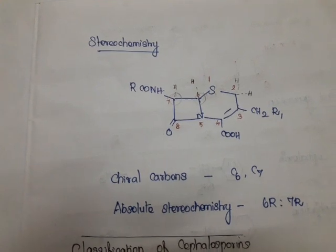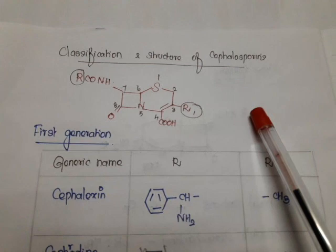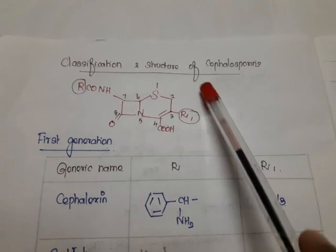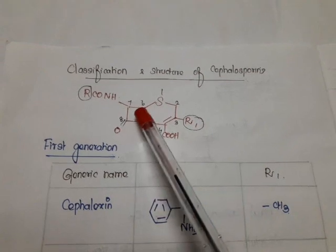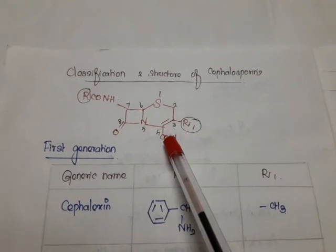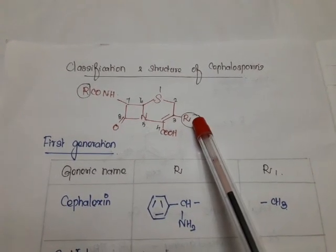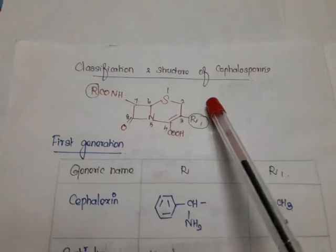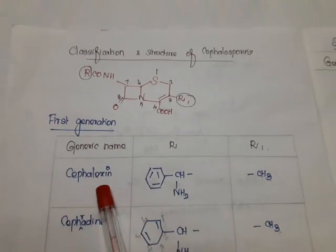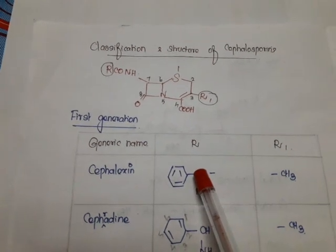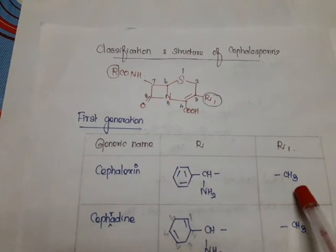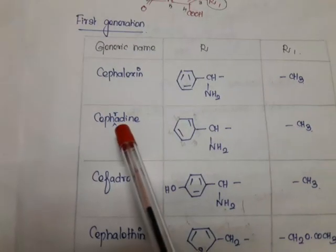Now we'll see the classification and structure of cephalosporin. Cephalosporins are classified based on generation into five types: first, second, third, fourth, and fifth generation. The general structure has a beta-lactam ring fused with a dihydrothiazin ring, a COOH group at position four, R1 at position three, and R-CO-NH at position seven. For cephalexin, R is alpha-aminobenzyl, and R1 is methyl. For cephradine, instead of a phenyl ring, 1,4-cyclohexadiene is attached at R; other features are the same.